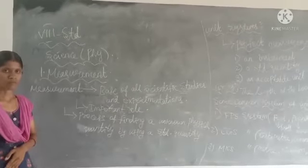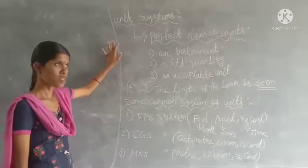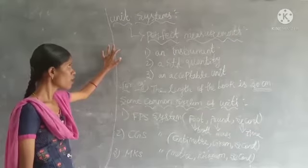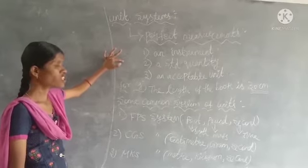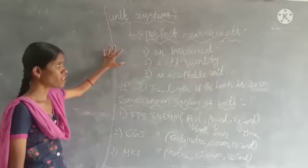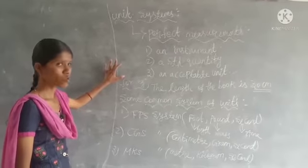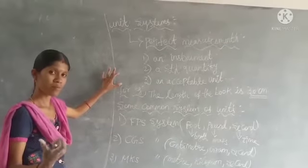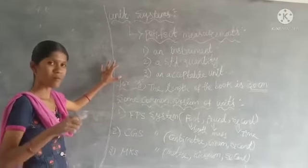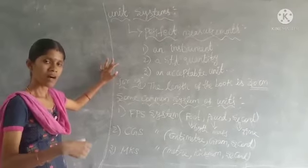The next topic is unit systems. For a perfect measurement, we need three tools. The first is instruments — we have to choose which type of instrument to use. The second is a standard quantity, such as length, mass, temperature, or time. The third is an acceptable unit — for example, length uses meter, mass uses kilogram, time uses second.